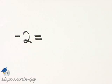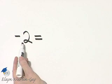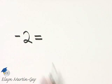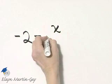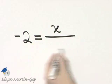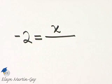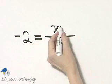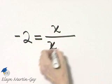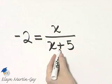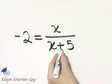Negative 2 is equal to x divided by the sum of x and 5. So it's x divided by the sum of x and 5. Remember, sum means addition.